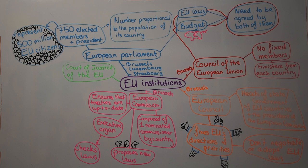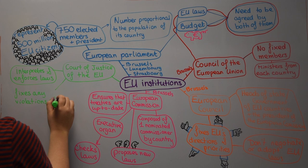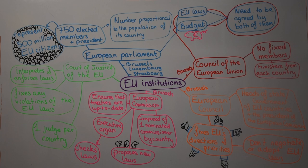Finally, we have the Court of Justice of the European Union, which interprets and enforces laws. It fixes any violations of laws or disagreements between countries. It's composed of one judge per country, plus 11 advocates to help.